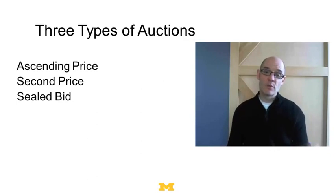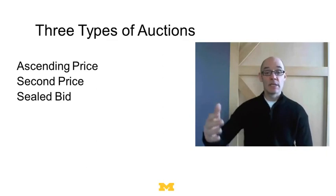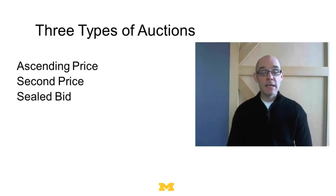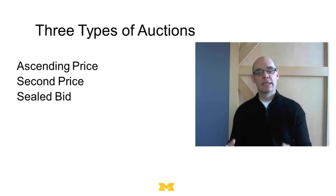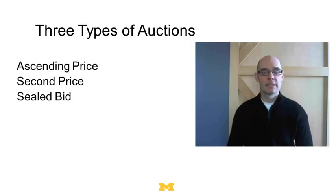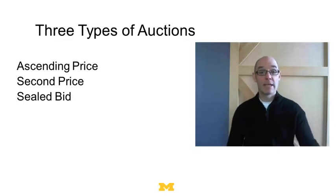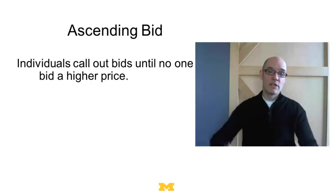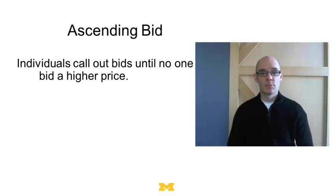We're going to talk about three types of auctions: ascending bid, second price, and sealed bid. An ascending bid is an auction where we keep calling out prices until no one wants to stay in anymore. A second price auction is a sealed auction where each person writes down an amount — the highest bid gets it, but they pay the second highest bid. A sealed bid auction is where everybody submits a bid and the highest bidder gets it at the amount they bid.